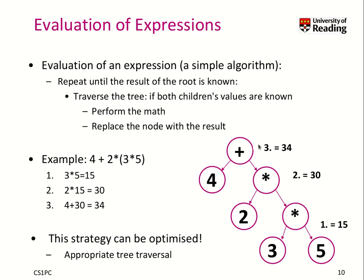That is represented as this little expression tree. We check: can we do the math at this node? No, because we don't know the result. Can we do it on this node? No. But on this node, we know the values of both children — 3 and 5 — so we can do the operation. 3 times 5 is 15. We replace the node with 15. Now we can do 2 times 15, so the result is 30. Then we do this last operation: 4 plus 30, which is 34. This simplified algorithm works.